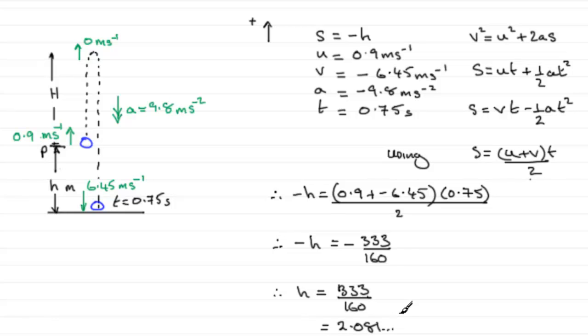Which you might want to round to two decimal places or the equivalent of three significant figures. If you do, then it follows that H equals 2.08 meters to three significant figures.